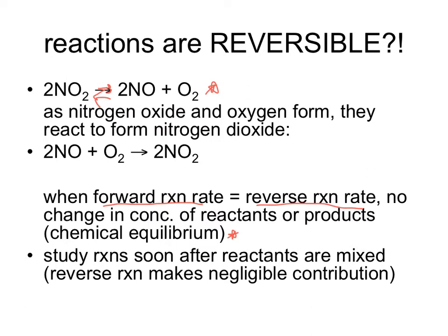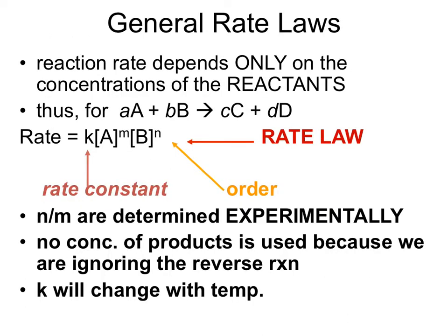Now that we've discussed the reversibility of reactions, let's move on to what we're actually covering for this lecture. General rate laws are going to be determined or dependent only upon the concentration of our reactants. We're able to make this assumption because we analyze our rates at the very start of a reaction progression — when there's only reactant A and B present and little to no products C and D. The reversible process is being ignored because it's not present in a very large quantity.